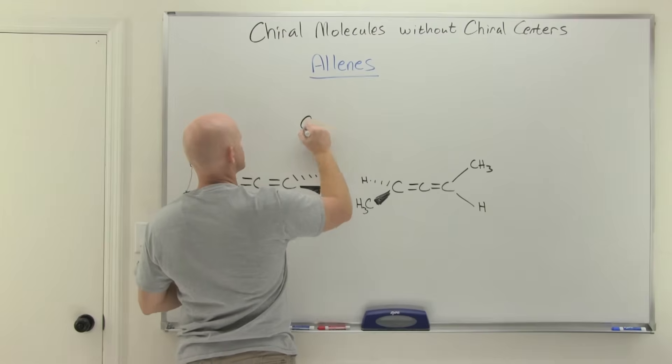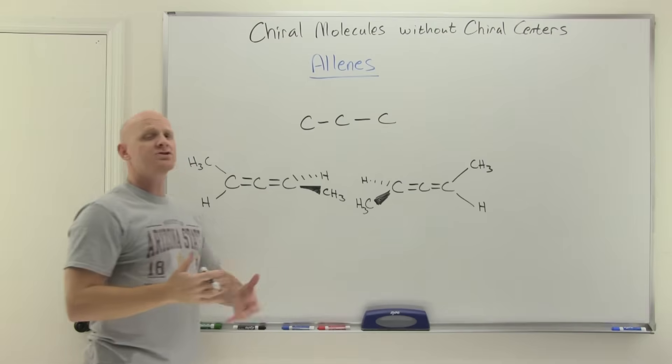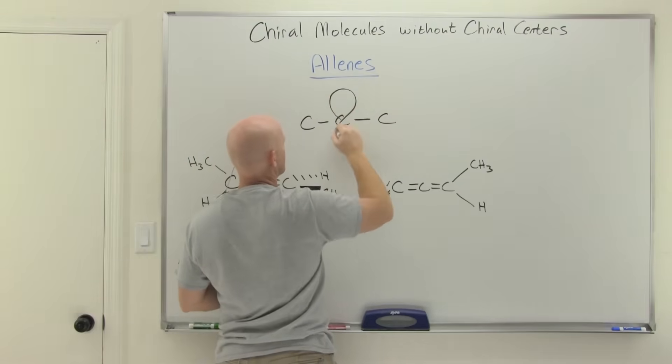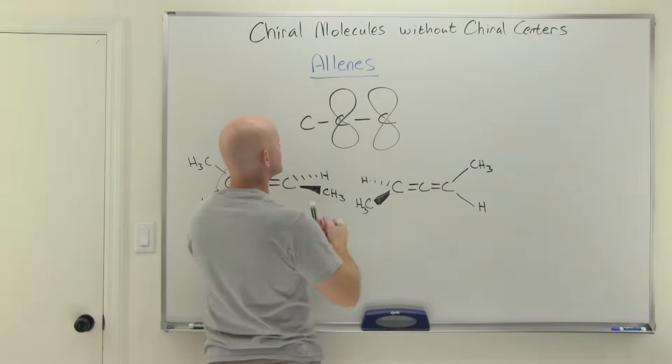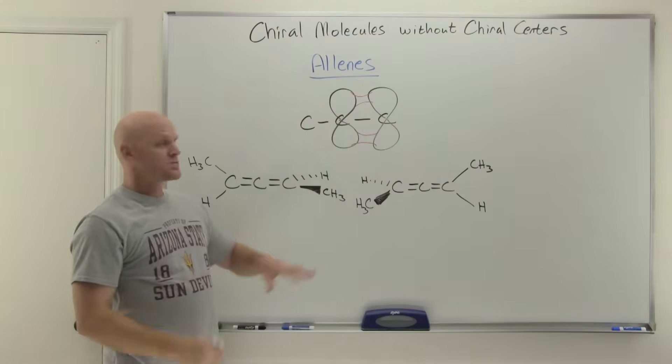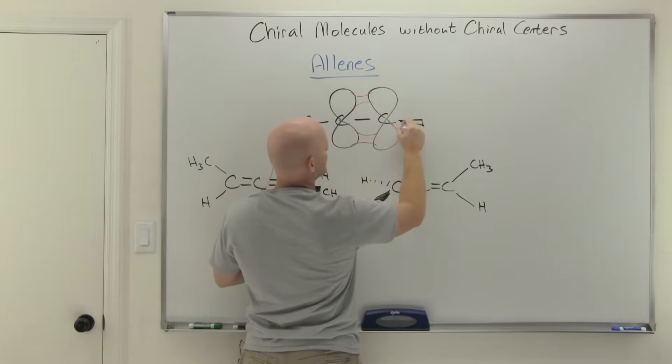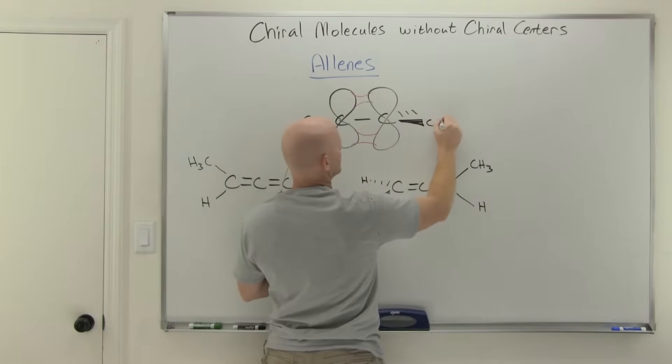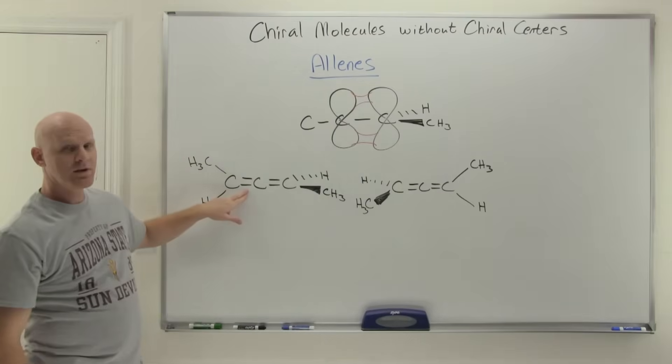So if we kind of take a look at the process here, so if I put a carbon next to a carbon next to a carbon, we'll put that single bond in there. But now I actually want to draw in the orbitals that are overlapping for that double bond. And so let's say I've got these p orbitals right here, and we're getting a little sideways overlap between them.